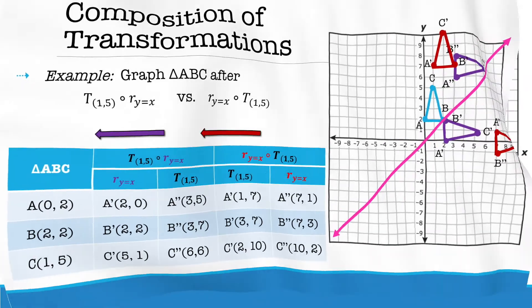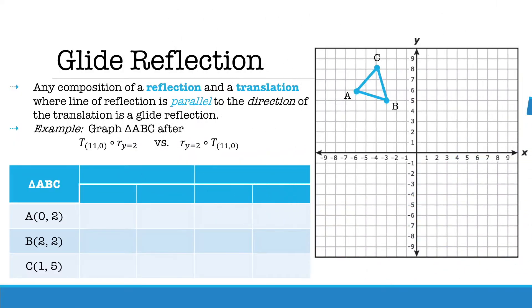Let's now take a look at a special composition known as a glide reflection. A glide reflection is any composition of a reflection and a translation where the line of reflection is parallel to the direction of the translation.